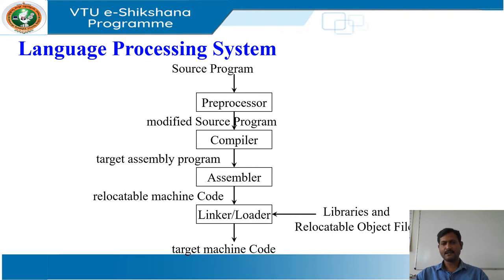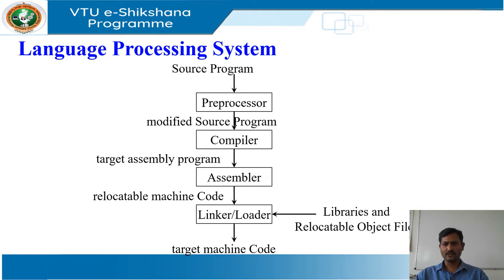The preprocessor may also expand shorthands called macros into source language statements. The modified source program is then fed to a compiler. The compiler may produce an assembly language program as its output because assembly level language is easier to produce as output and is easier to debug.